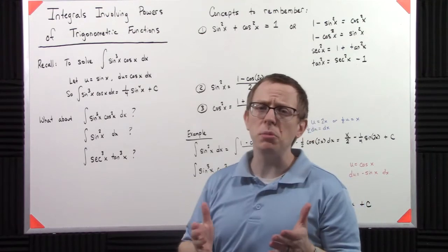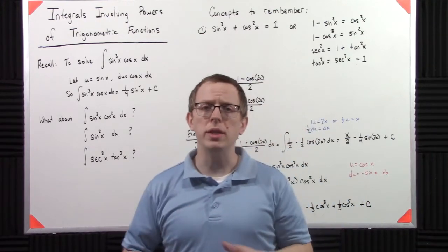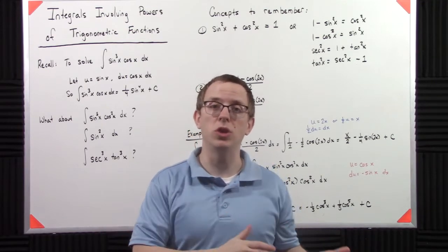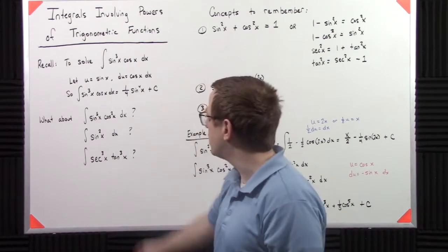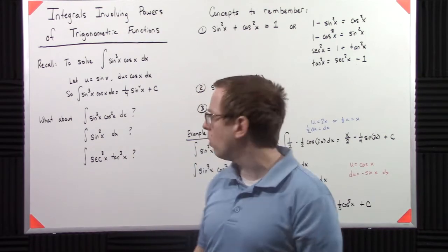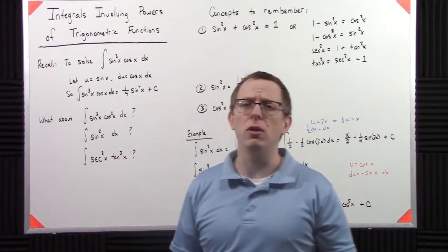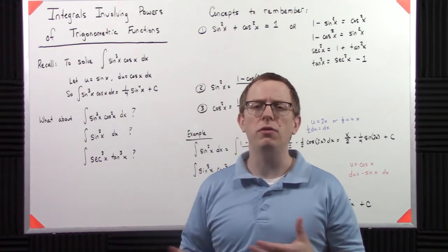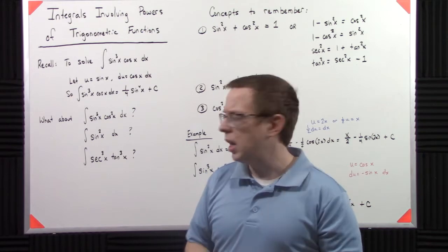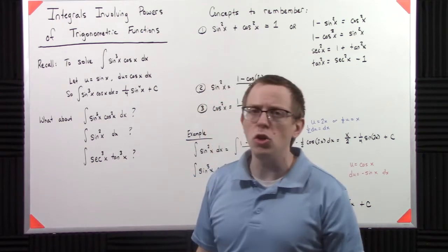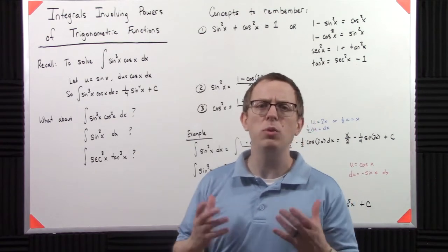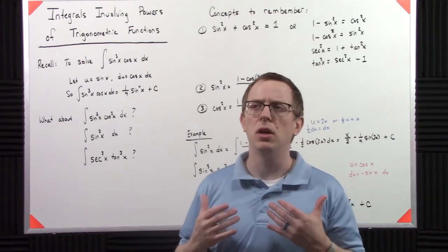So that's a simple enough way to solve these. However, what happens if it's not sine cubed times cosine dx? What if it's sine cubed times cosine squared? How do we solve that? Or what if it's just sine squared? It seems easy enough to do sine squared, but what's your u and what's your du? How do we solve these? And then what if we get something like secant cubed x tangent cubed x dx? How do we solve these types of problems?